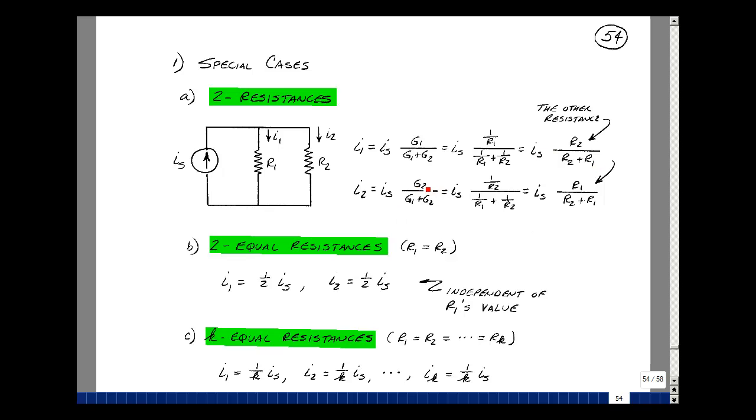The same is true here. Let's replace this by its equivalent of 1 over R2, 1 over R1, 1 over R2. Multiply the numerator and denominator by R1, R2, and you get R1, R2, and then R1.